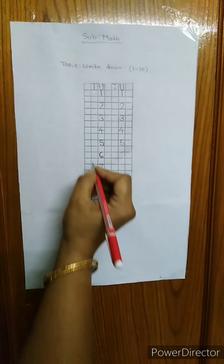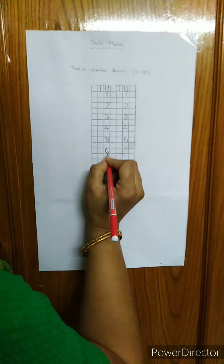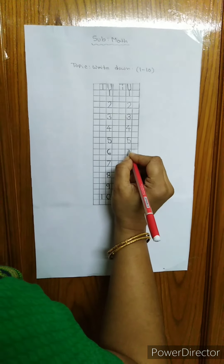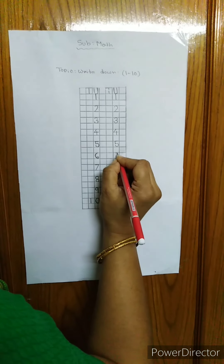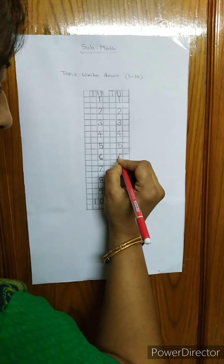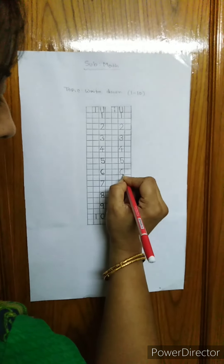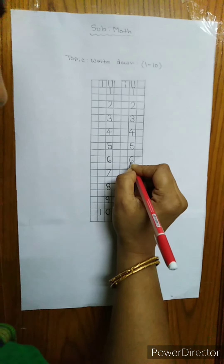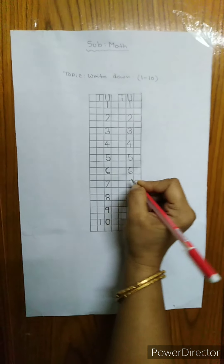Next is 6. I will write 6. 6 looks like C. At first, I will draw a big half circle, start from here, touch the down line, and I will draw a small circle here to here. This is 6.